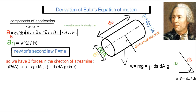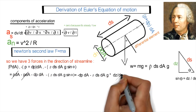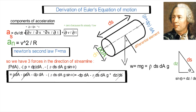We have negative (p + dp)·dA because it is in the opposite direction of motion, and also negative mg·sinθ because it is also in the opposite direction of motion, and positive p·dA. The mass equals ρ times the volume, which is ρ·dA·ds. Also, sinθ equals dz/ds from the trigonometric relation.